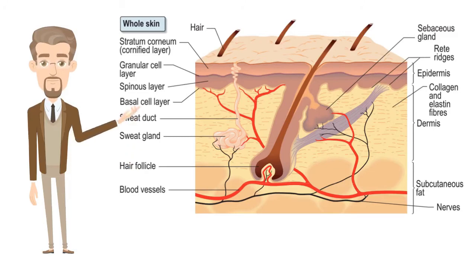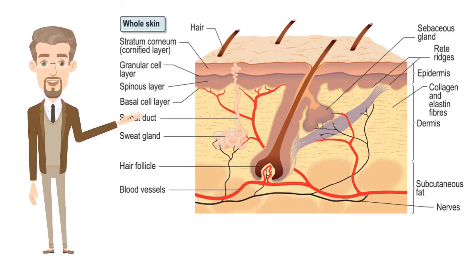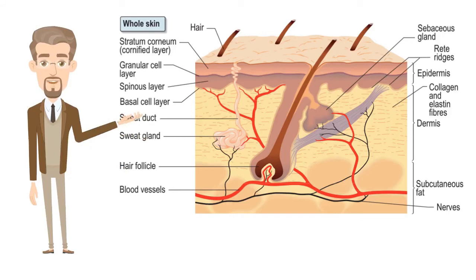The epidermis is the outer layer of the skin, defined as a stratified squamous epithelium, primarily comprising keratinocytes in progressive stages of differentiation. Keratinocytes produce the protein keratin and are the major building block cells of the epidermis. As the epidermis is avascular, containing no blood vessels, it is entirely dependent on the underlying dermis for nutrient delivery and waste disposal through the basement membrane. The epidermis is composed of layers; most body parts have four layers, but those with the thickest skin have five.